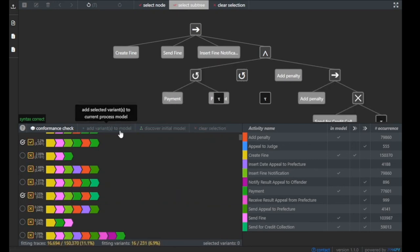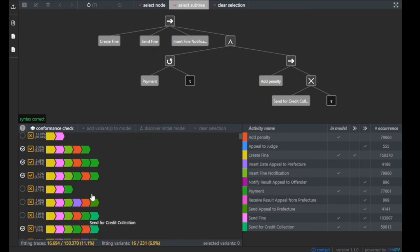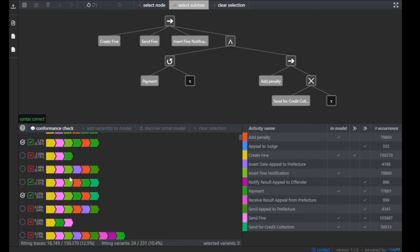What then happens is in the background that the algorithm will alter the process model in such a way that the new selected variant plus the three old selected variants are fitting the model plus the new one that we just selected. And this is how it works.